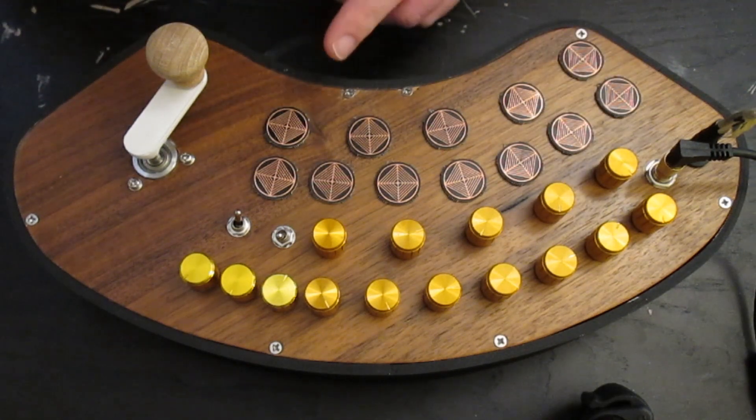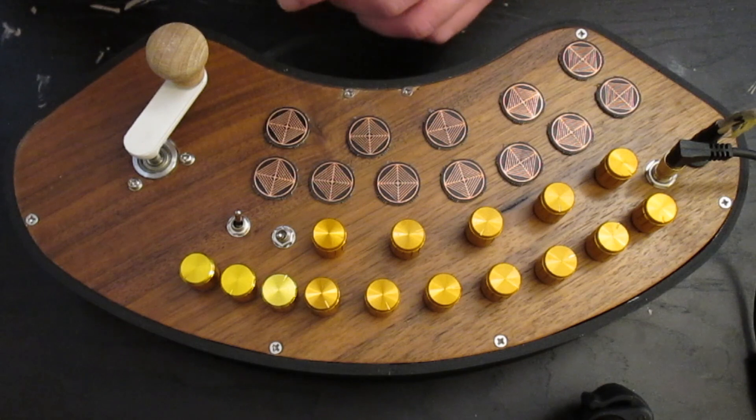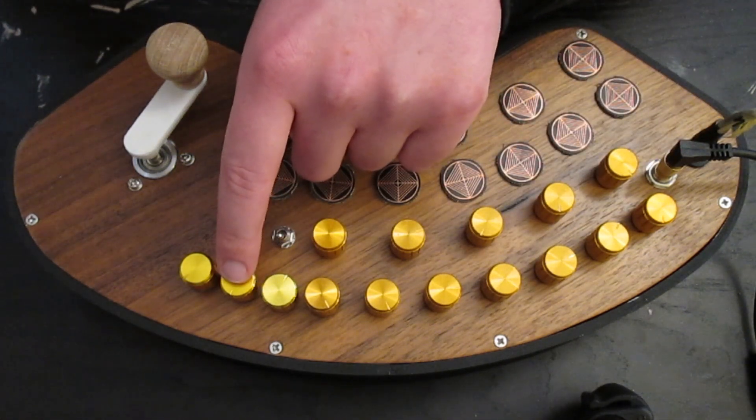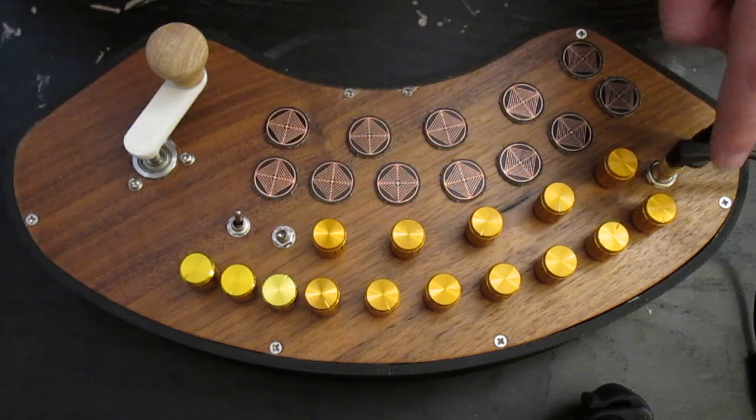After the filter the mixed oscillators go through a digital amplifier which is set by this knob. The gain is set by this knob. And then we go out through the audio jack.